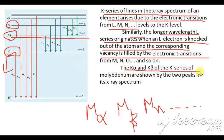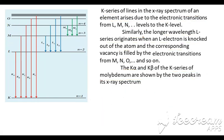K-alpha and K-beta of the K series are shown by the two peaks. This is about the continuous and characteristic X-ray spectrums.